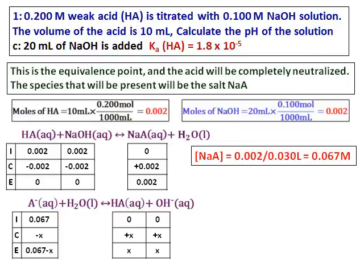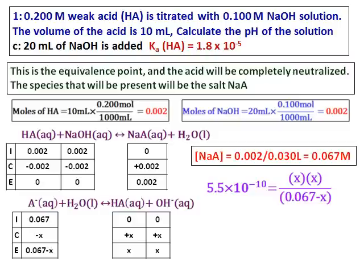Set up the ICE table and get the value of x. I have converted the given Ka into Kb — that is why 5.5 times 10 to the power of negative 10 is used. If the equation has OH minus in it, use the value of Kb. If the equation has H plus in it, use Ka. This equation has OH minus, which is the reason I am using Kb.